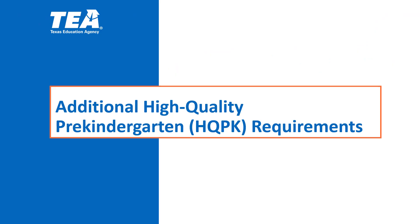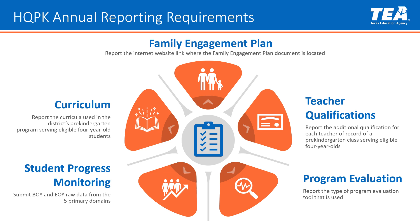Let's review some additional high-quality pre-kindergarten program requirements that must be reported to ECDS for all pre-kindergarten programs serving eligible 4-year-old students. Here is a brief overview of the five high-quality pre-kindergarten annual reporting requirements: a family engagement plan, teacher qualification data, program evaluation data, student progress monitoring data, and curriculum.